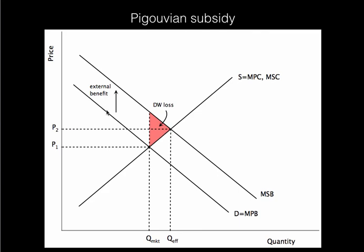Some people had a high enough willingness to pay that even without the subsidy they would still get it — that's why we still have this market outcome over here. It's just that it's a little too small compared to the efficient amount. There are some people for whom it's just not worth it to get that vaccine, but if we were to give them that external benefit that they're creating, that would give them the right incentives. So now we want to be shifting this demand curve on top of that marginal social benefit curve by subsidizing them by the right amount.